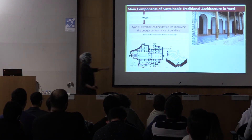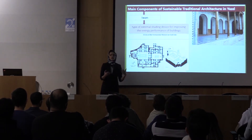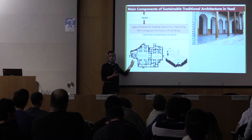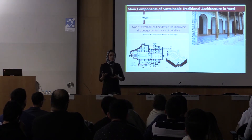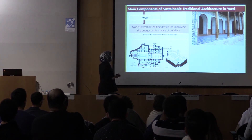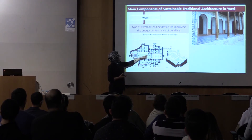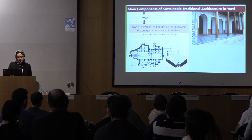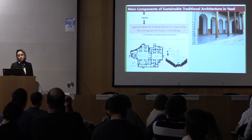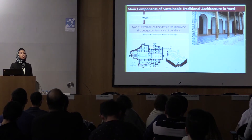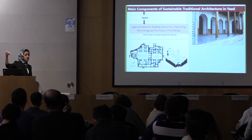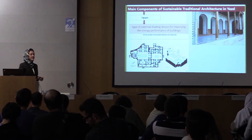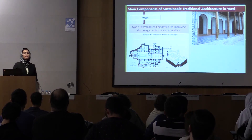Here we can see an ivan. What is it? We have closed areas, open areas, and the ivan is a semi-closed area — a transition between closed and open. It is located most of the time around the central courtyard. It is also a solution for improving energy performance because it acts as a kind of shading device. In summer, when we have strong sun, the ivan provides shade so the windows are protected from solar radiation.